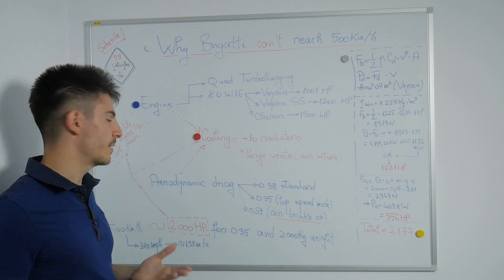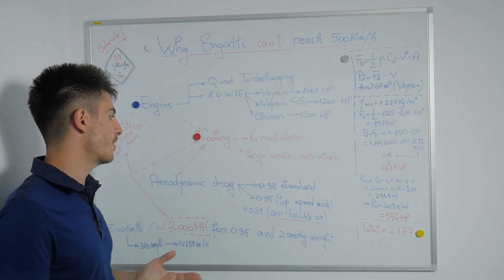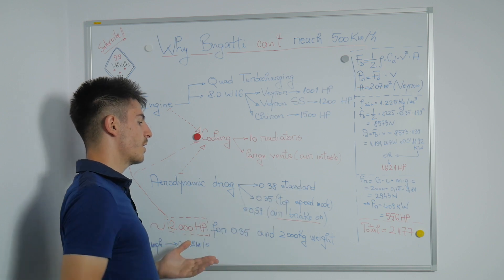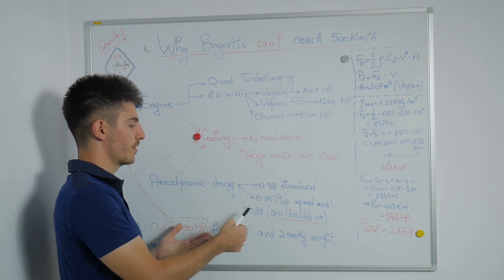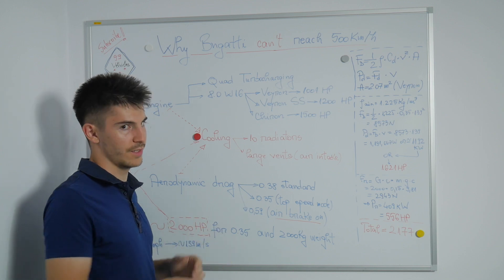Now, as you can probably see, we have the aerodynamic drag coefficient for the Bugatti Chiron: 0.38 for the standard mode, 0.35 for the top speed mode, and 0.59 when the air brake is on.